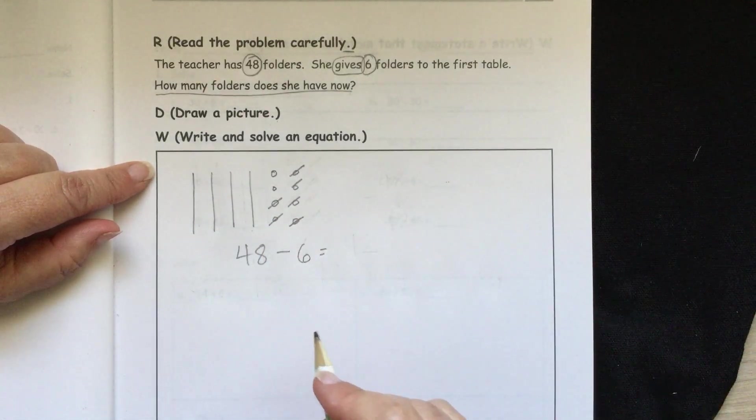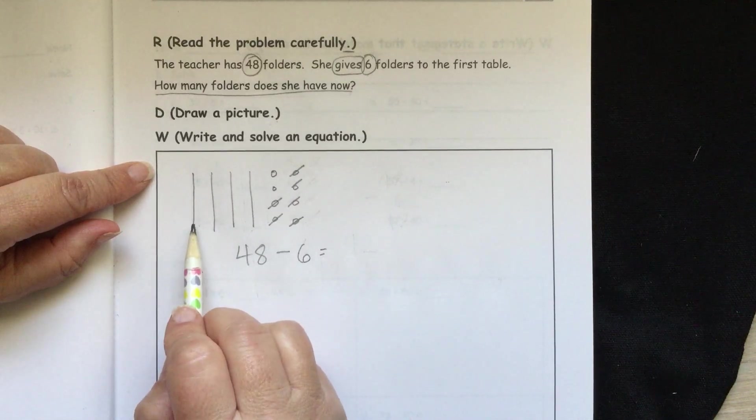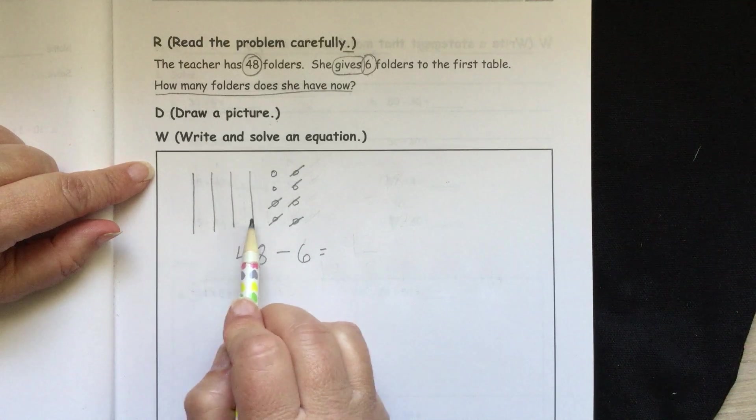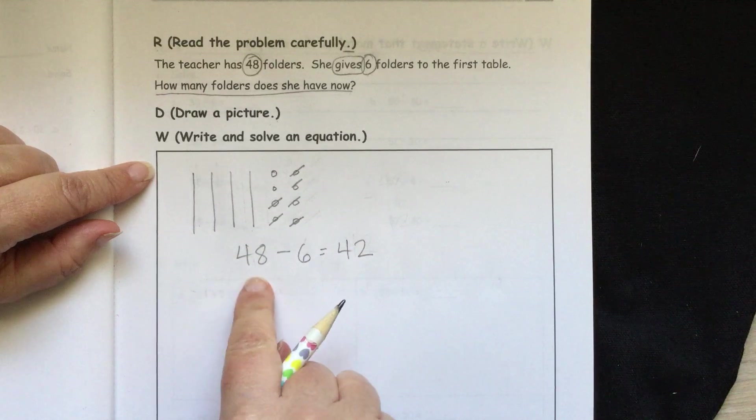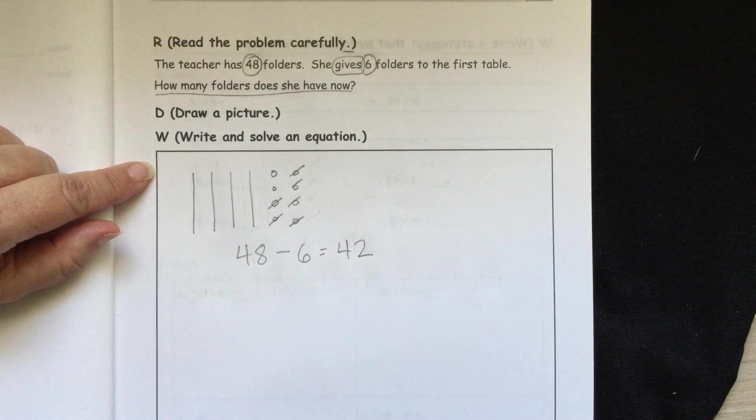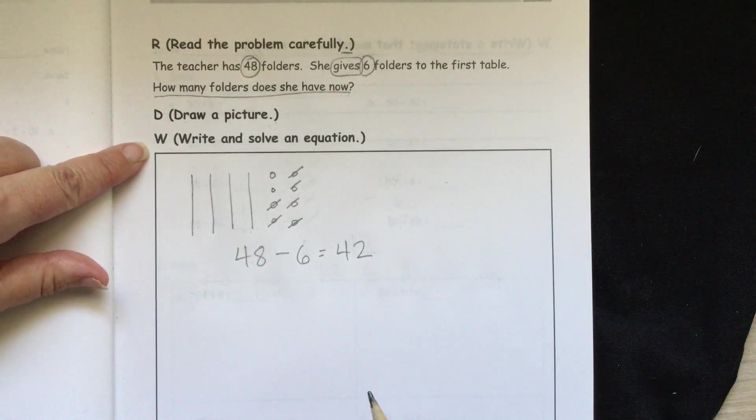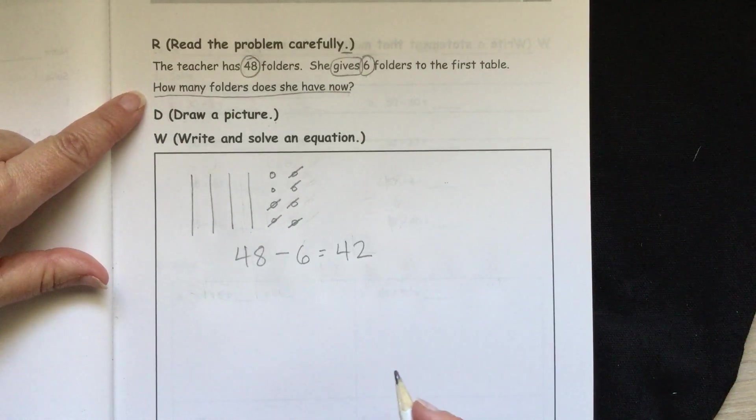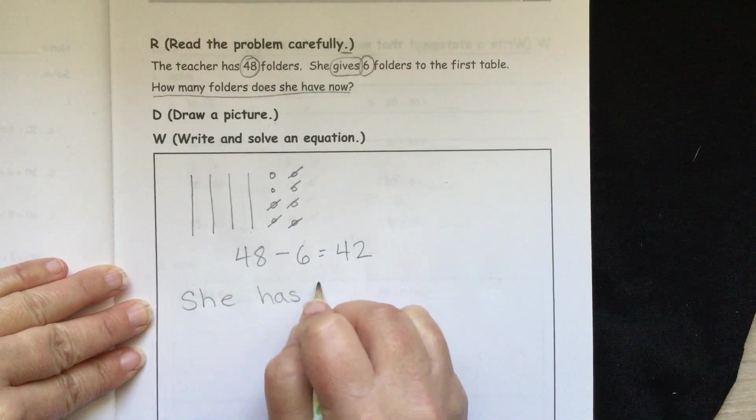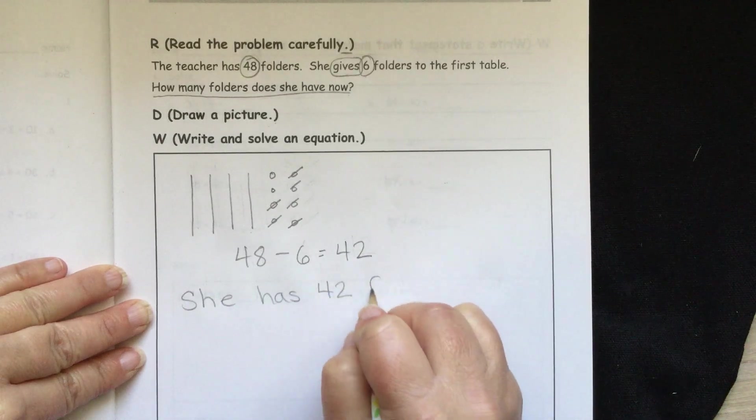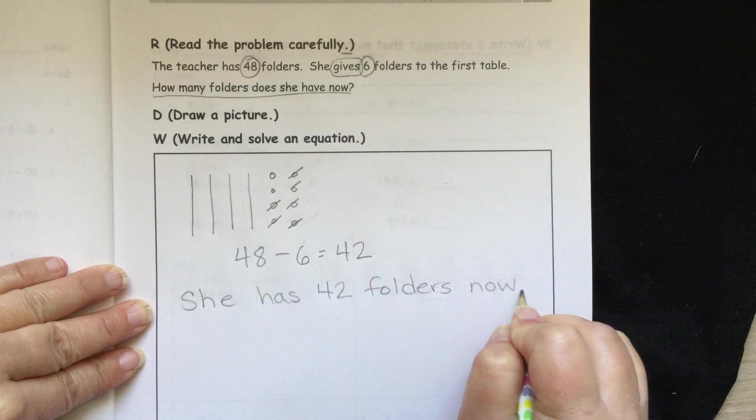Then we can count up our tens and ones to find our answer. 10, 20, 30, 40, 41, 42. So 48 minus 6 equals 42. And then we need to answer our question. We have to write a sentence for that. How many folders does she have now? She has 42 folders now.